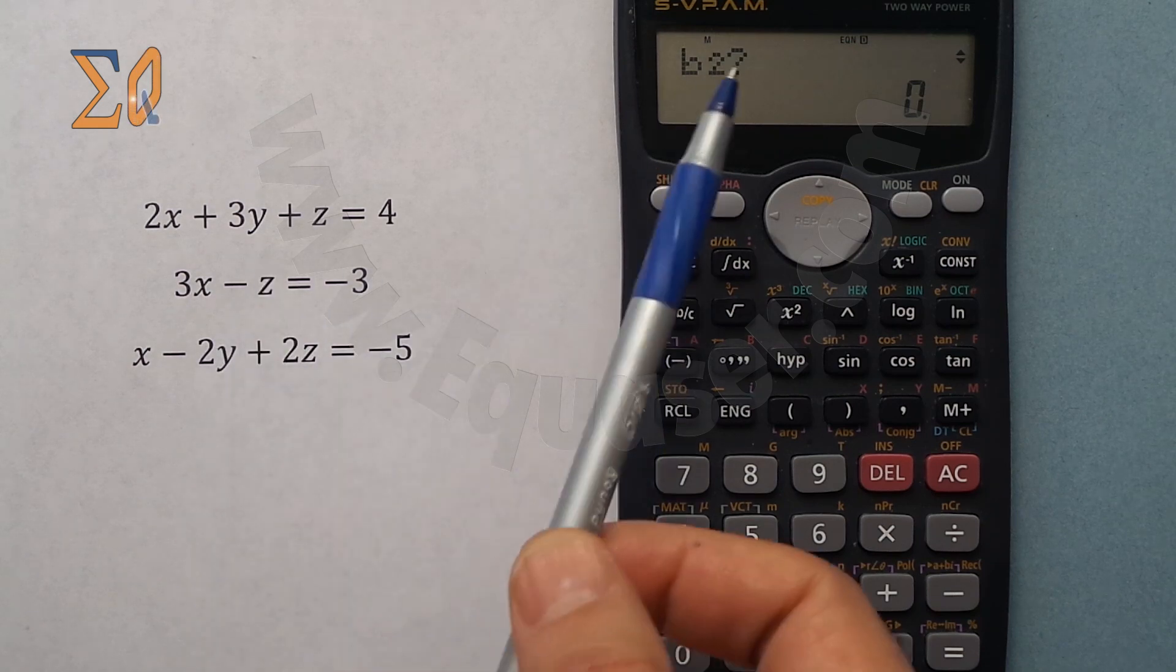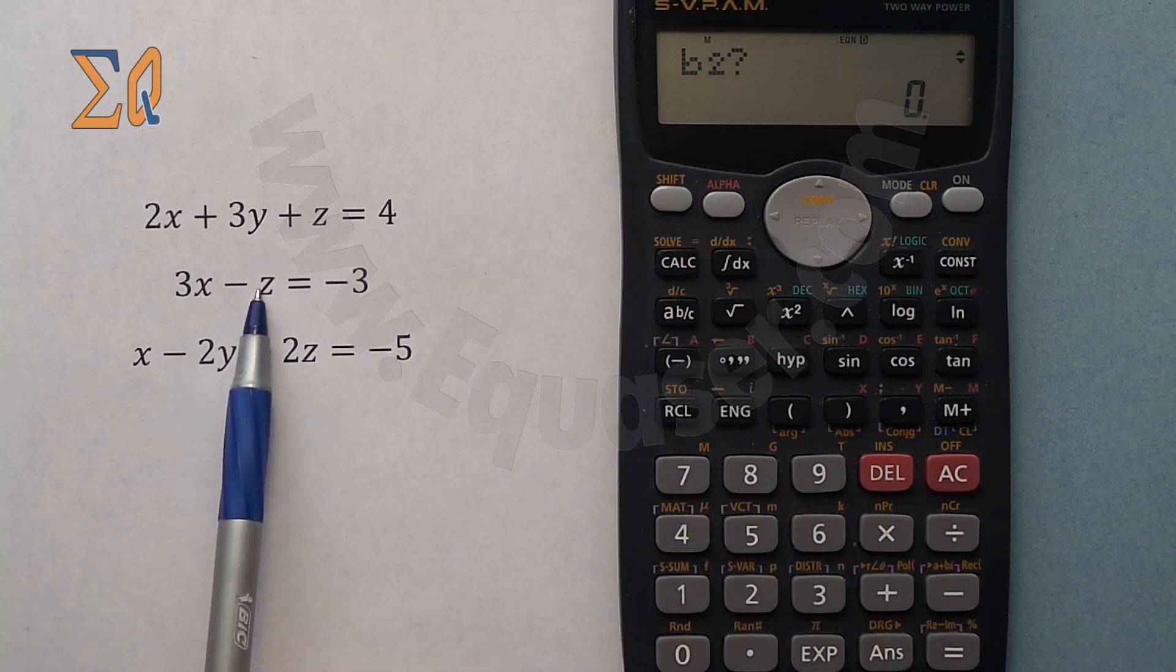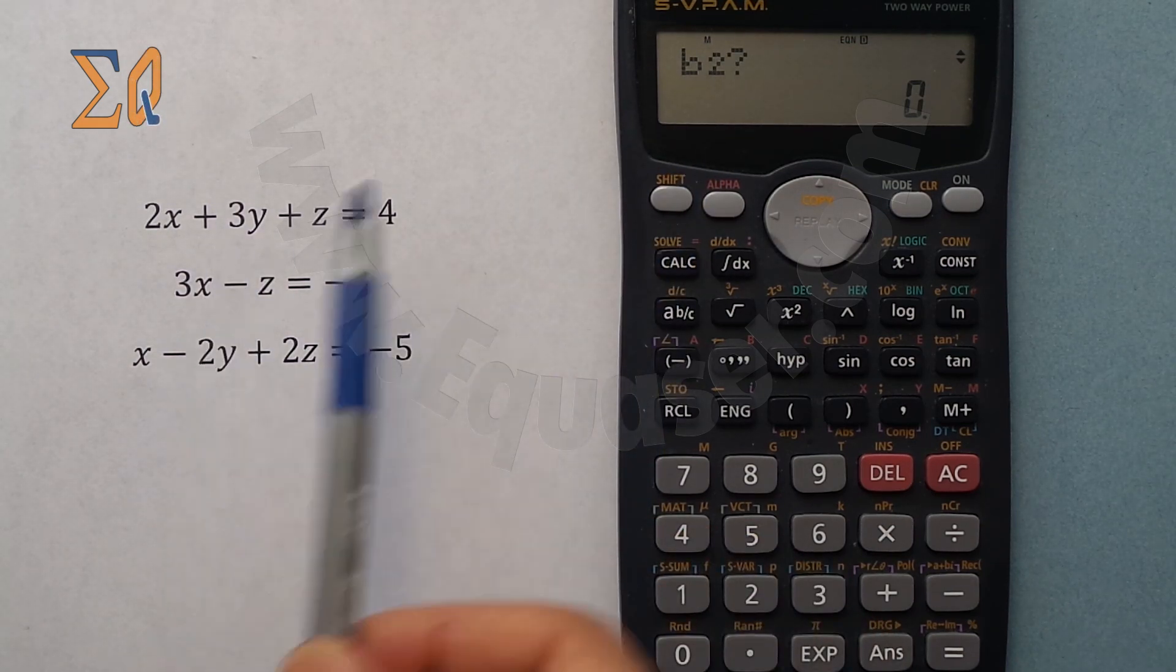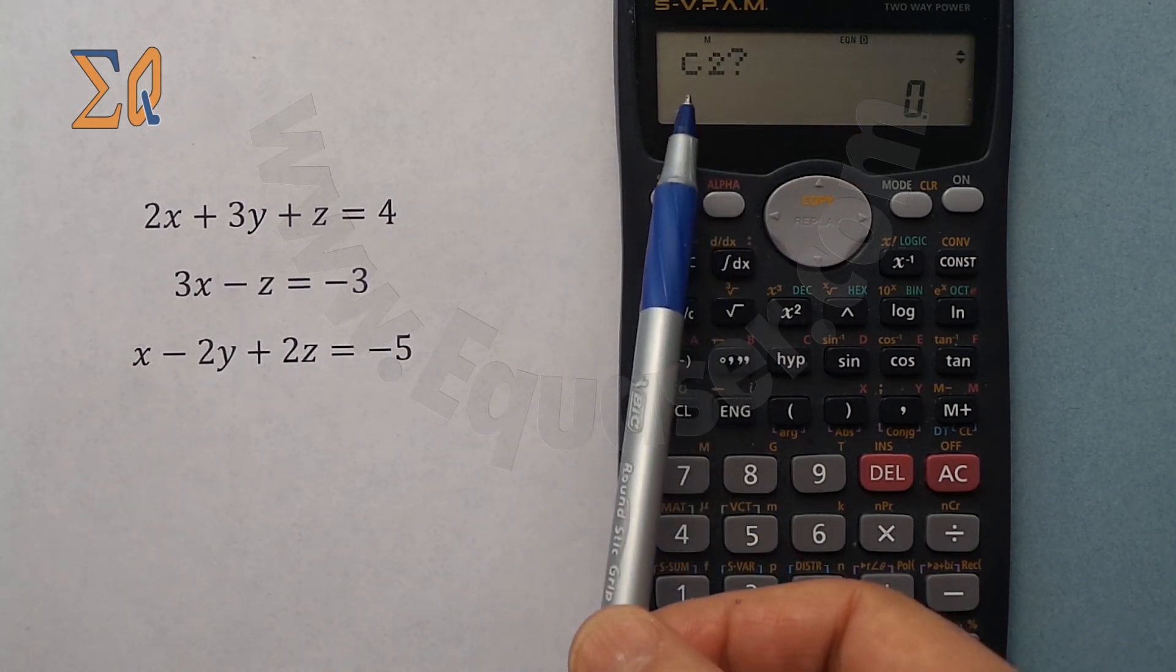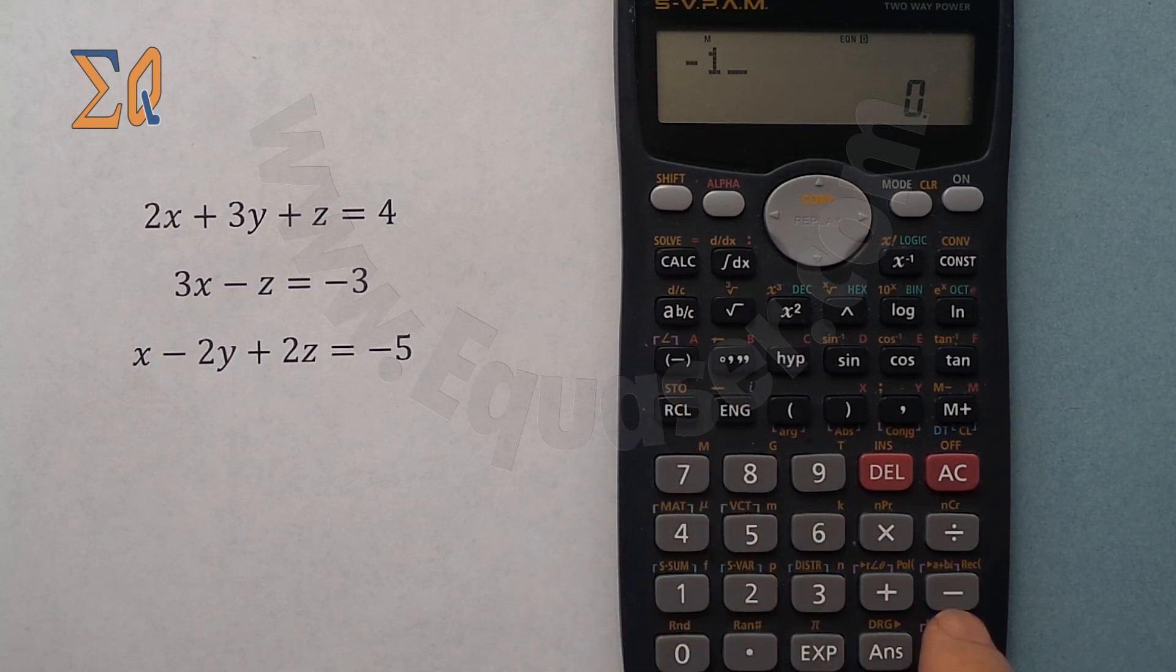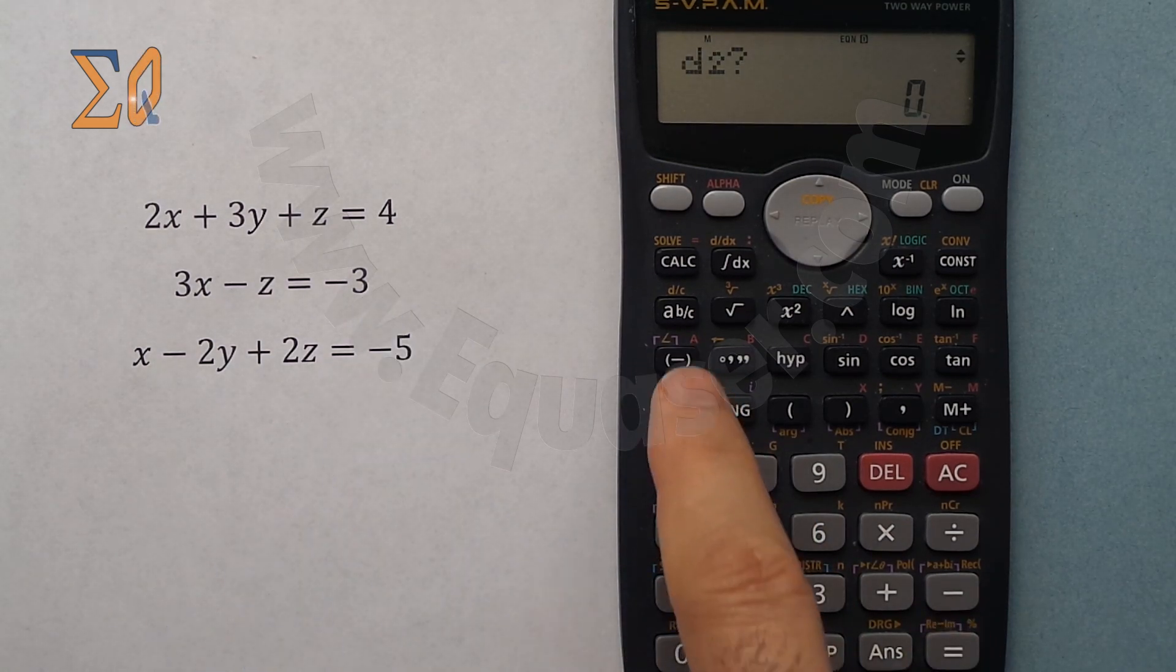For B, B refers to the coefficient of y. Because I don't have y here, we enter 0. So 0. That is C is for z, so minus 1, and d is minus 3.